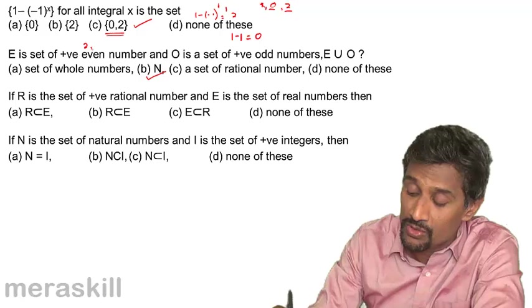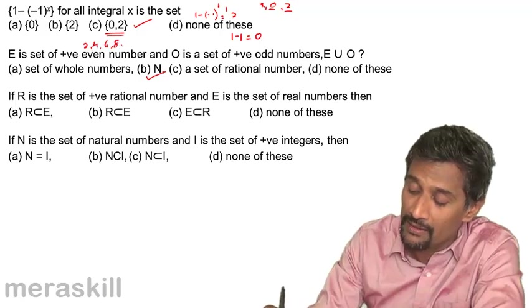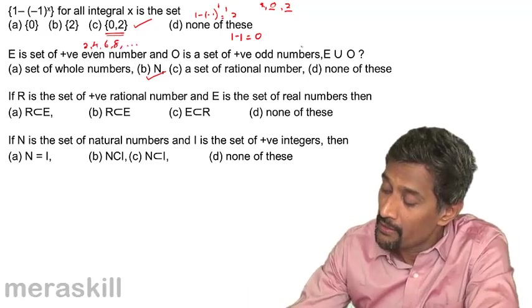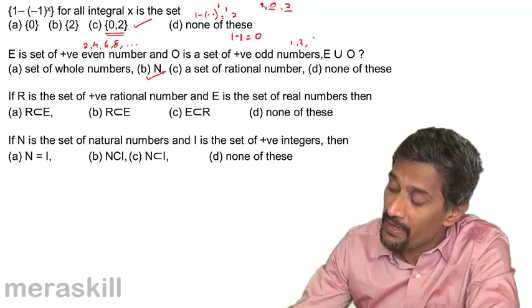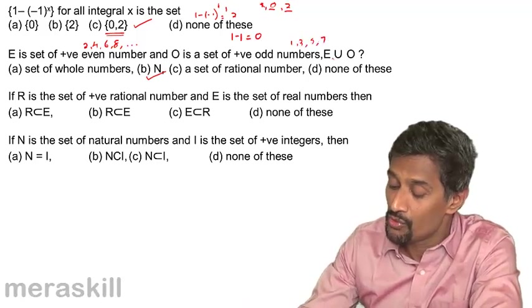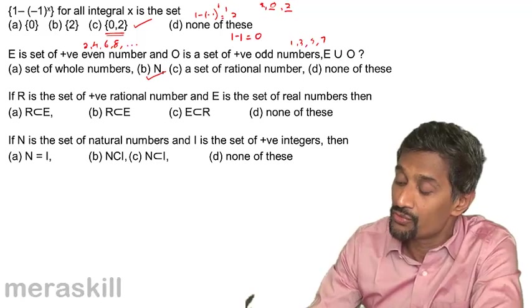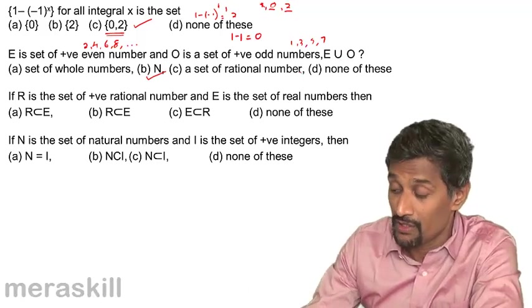Even numbers are 2, 4, 6, 8, 10, etc. Odd numbers are 1, 3, 5, 7. And if you combine the two, E ∪ O = {1, 2, 3, 4, 5, 6, 7, ...}, which is the set of natural numbers.